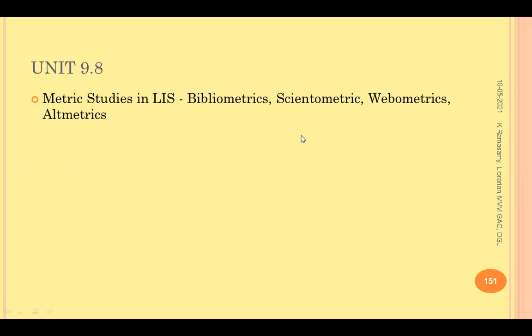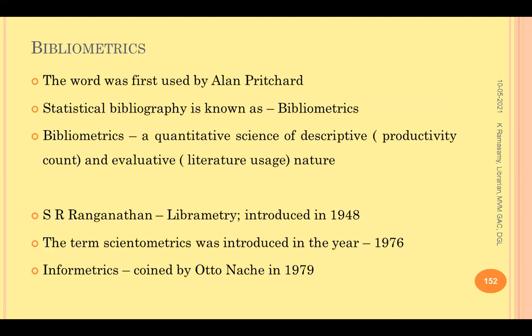Unit 9 talks about metric studies in library and information science. We have bibliometrics, scientometrics, webometrics, and altmetrics. All these metric studies are quantitative studies. The idea of applying quantitative tools and techniques — statistical and mathematical tools and techniques — in library science research has been a long tradition.